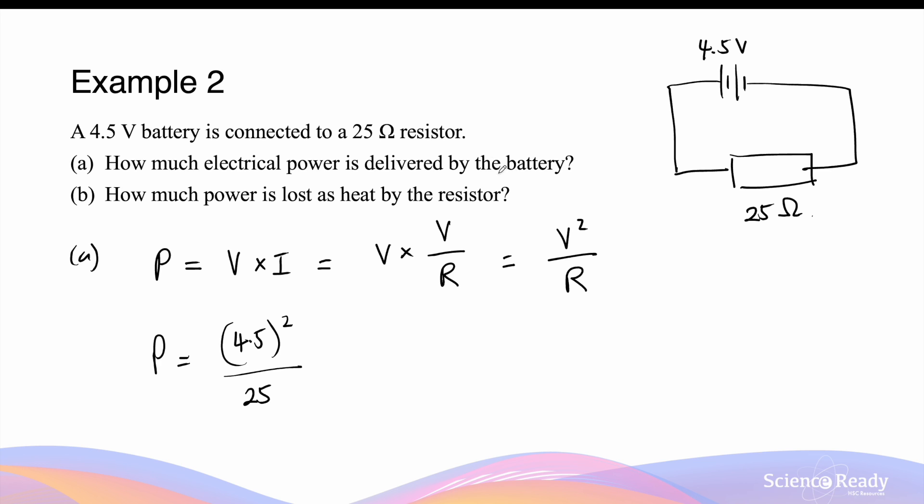Of course, in this case, if the battery also has some amount of internal resistance, this will increase the resistance of the circuit as well. And the power delivered will be 0.81 watts or joules per second.